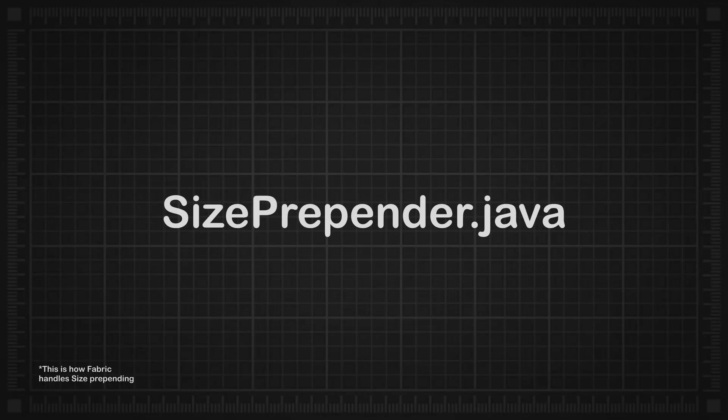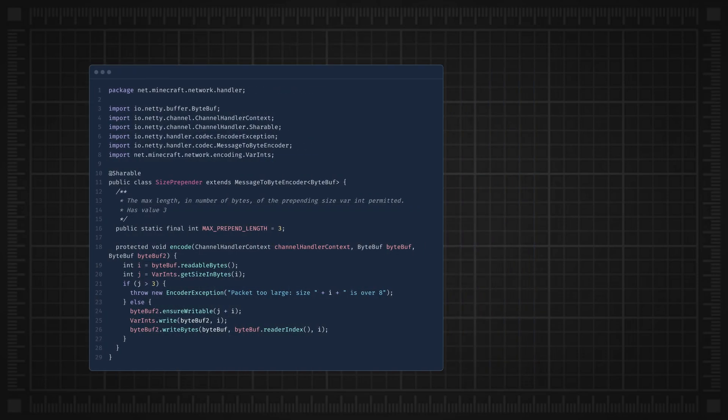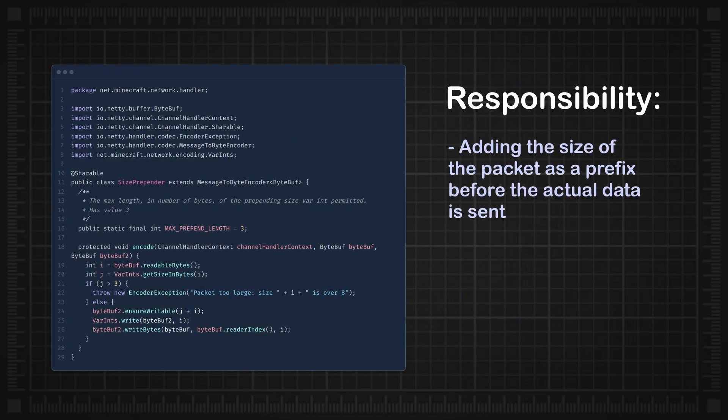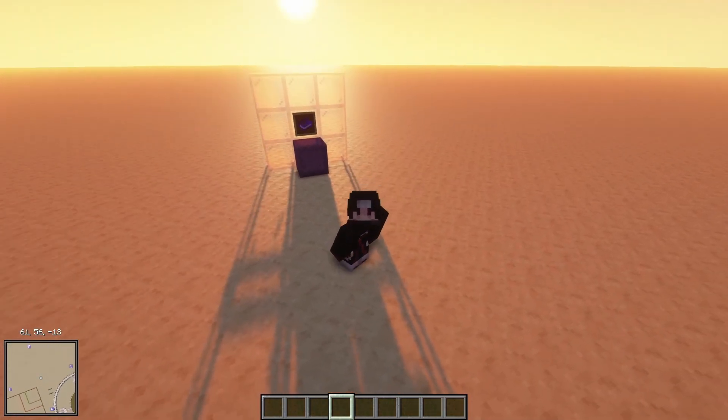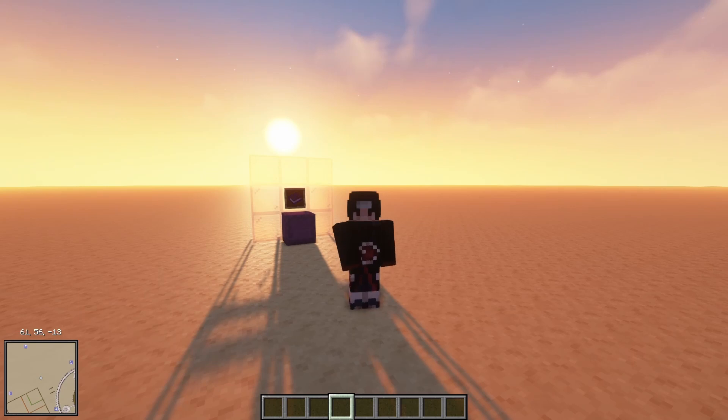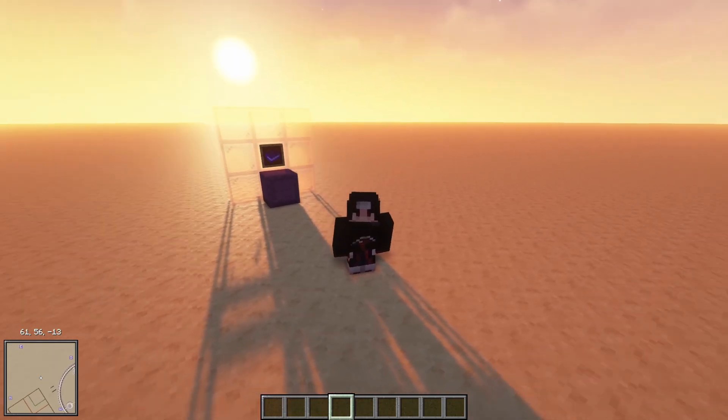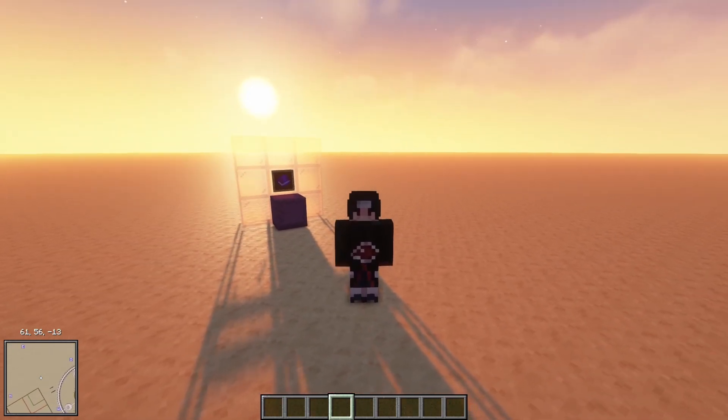This is handled in the size prepender file. The size prepender class is responsible for adding the size of the packet as a prefix before the actual data is sent over the network. This is an important step in network communication because it allows the receiver to know how much data is coming, which is crucial for correctly reading and processing the data.